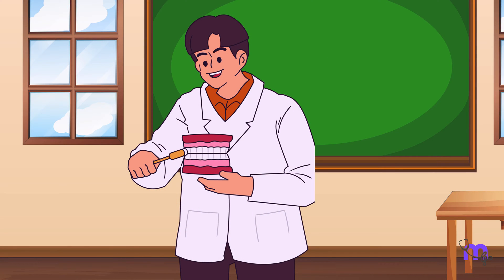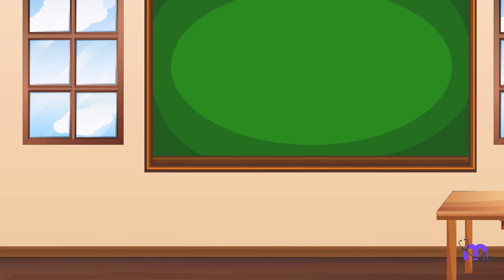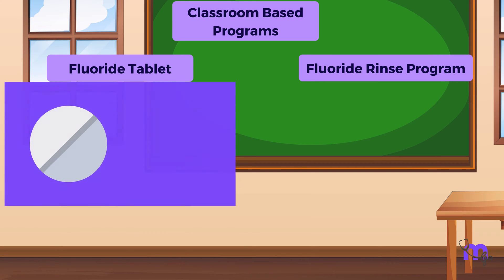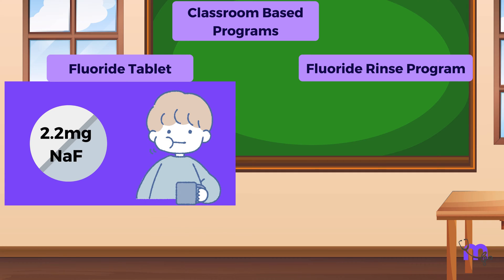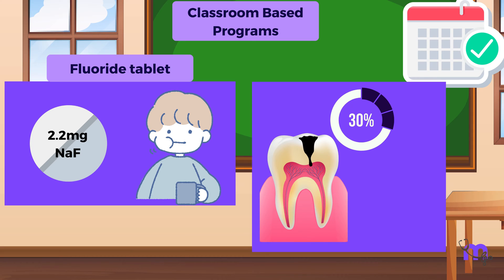The resource person first demonstrates on a dental model how the brush should be angulated at 45 degrees, followed by short vibratory strokes. The children are then asked to demonstrate under the direct supervision of the dental professional or the school teacher. Some of the classroom-based programs include fluoride tablet and fluoride mouth rinse programs. In the fluoride tablet program, one tablet of 2.2 mg sodium fluoride is given to each student on every school day and is advised to be consumed in a swish-and-swallow technique. Daily usage of these fluoride tablets containing 1 mg of fluoride have shown a 30% reduction in the occurrence of dental caries and is hence suitable for preschool children.